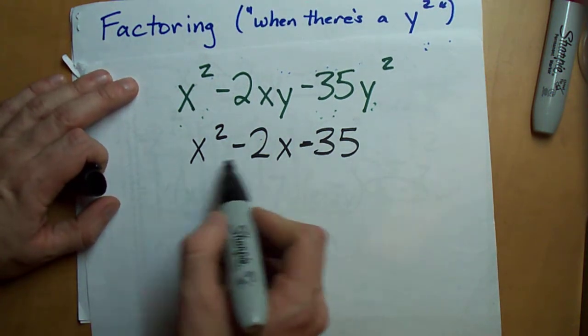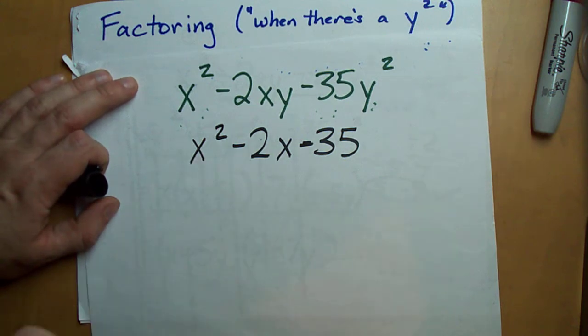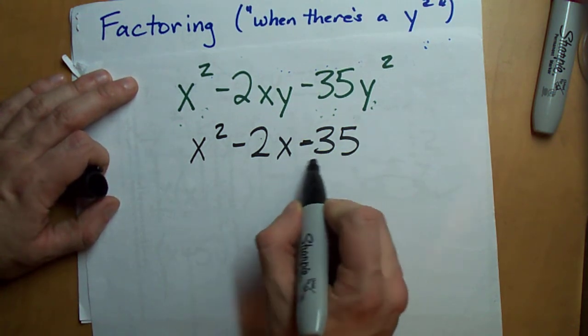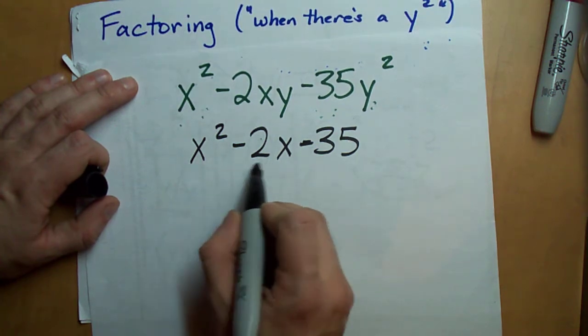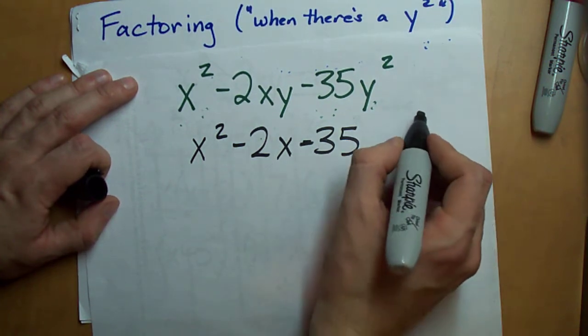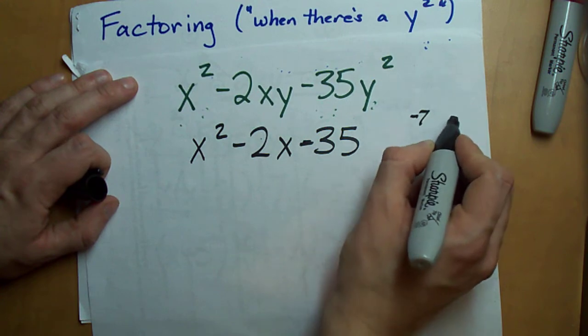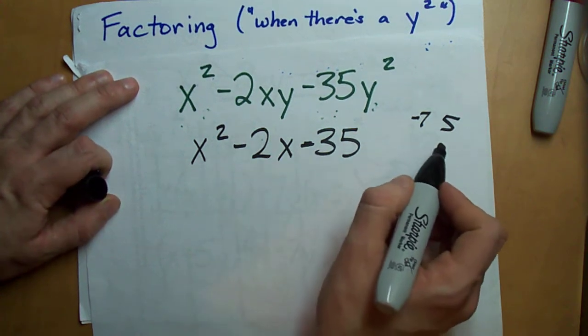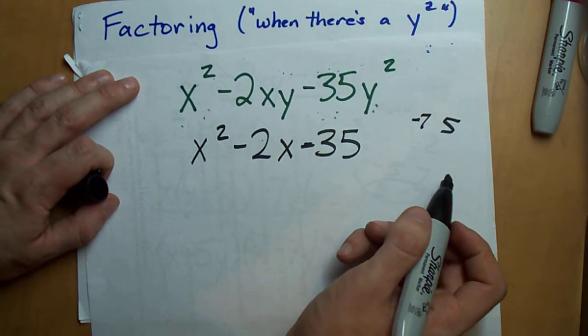Now factor this instead. This is an easy case of factoring. There's nothing in front of the x squared. Two numbers that multiply to negative 35 and add to negative 2. Negative 7 and 5 multiply to negative 35 and add to negative 2.